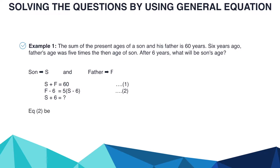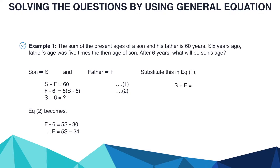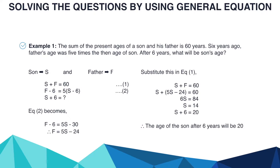Equation 2 becomes F minus 6 equals 5S minus 30, so F equals 5S minus 24. Substituting into equation 1: S plus 5S minus 24 equals 60, so 6S equals 84, giving S equals 14. Therefore S plus 6 equals 20. The age of the son after 6 years is 20.